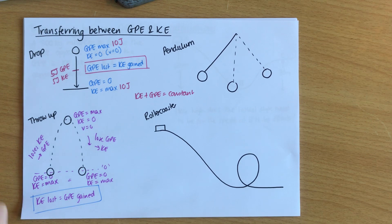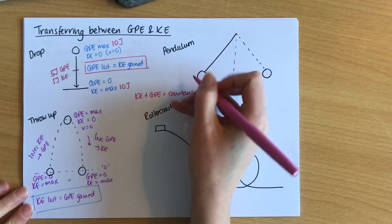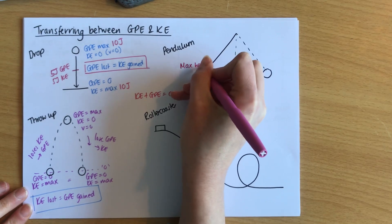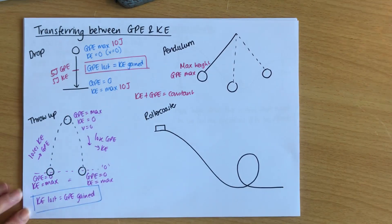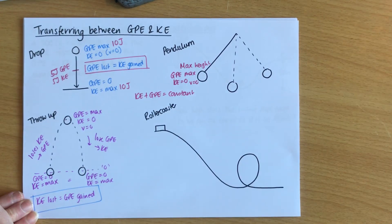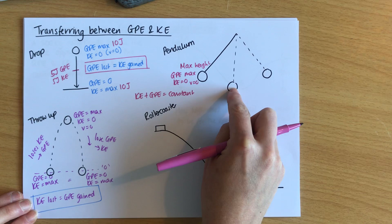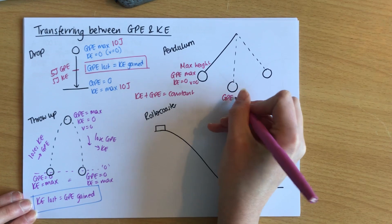A slightly trickier problem is a pendulum — something that swings freely from side to side. The most common example is a grandfather clock. When you pull the pendulum up to let it start, at that point this is the maximum height of the pendulum, which means there's the maximum GPE. At the very start when you're holding it ready to go, the kinetic energy equals zero because there's no velocity. When it swings, it gradually loses height until the bottom point, where the GPE is a minimum.